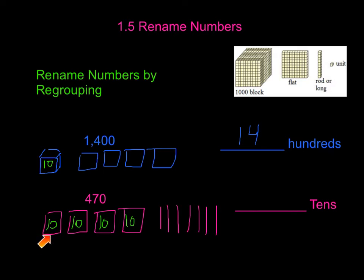So then all we have to do is add. We're going to go 10, 20, 30, 40, 41, 42, 43, 44, 45, 46, 47. And our answer is then 47 tens.